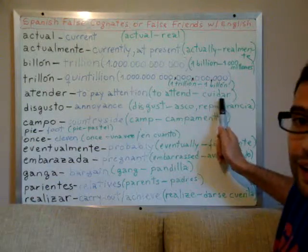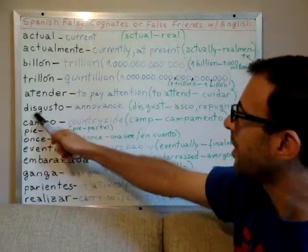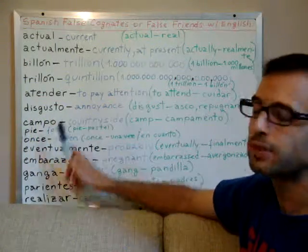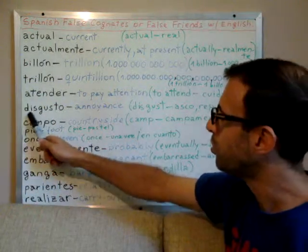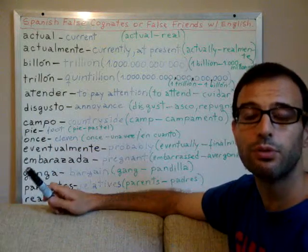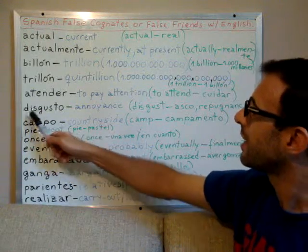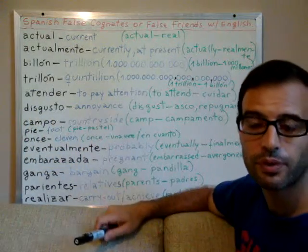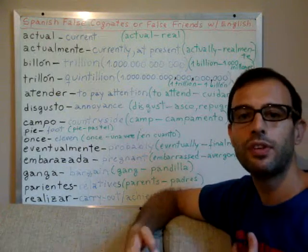'Atender' does not mean 'to attend.' 'Atender' means 'to pay attention.' The word for 'to attend' — the verb — is 'asistir.' And this is another false friend: 'disgusto.' 'Disgusto' looks very similar to 'disgust,' but it is not 'disgust.' 'Disgusto' means 'annoyance.'